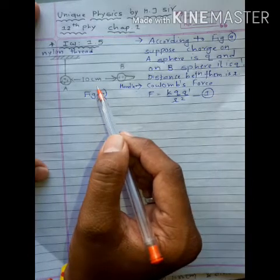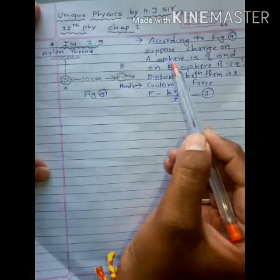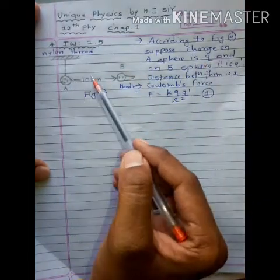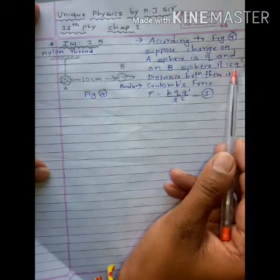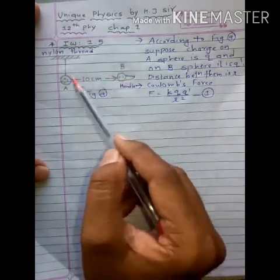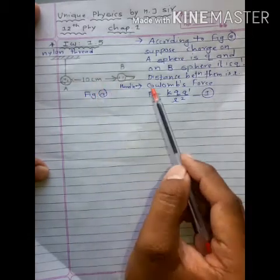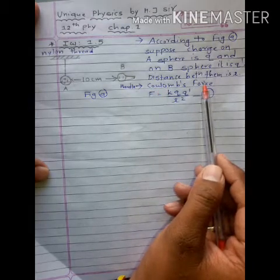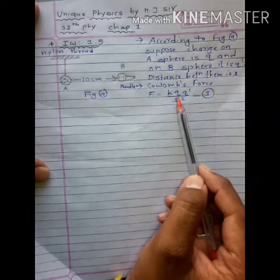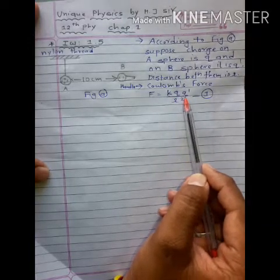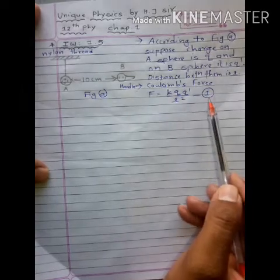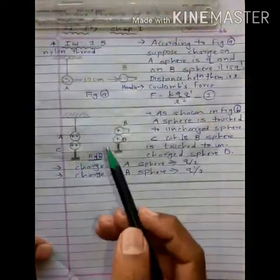First, we explain the force acting between these two spheres. According to figure A, suppose the charge on sphere A is q, while the charge on sphere B is q'. The distance between them is R (10 cm = R). So the Coulomb force acting between the two spheres is given by: F = k·q·q' / r².